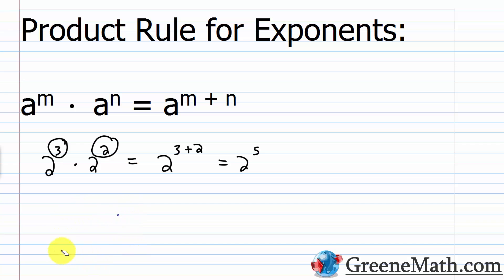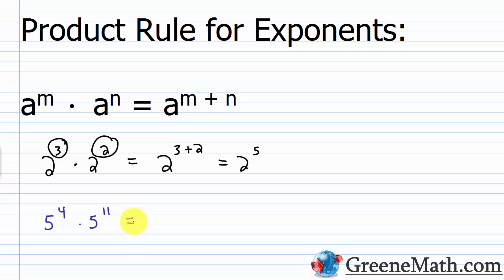Another example: five to the fourth power multiplied by five to the eleventh power. The base five stays the same, and we just add the exponents. Four plus eleven is fifteen, so this would be five to the fifteenth power.